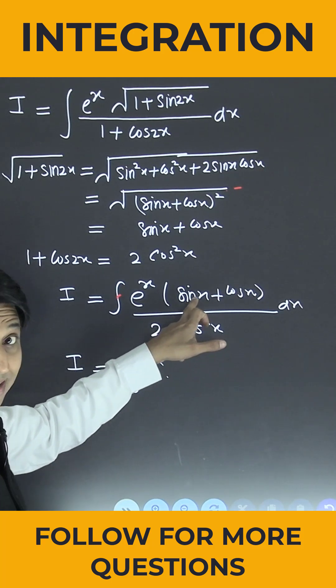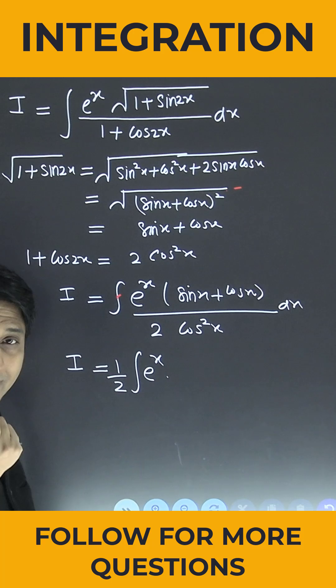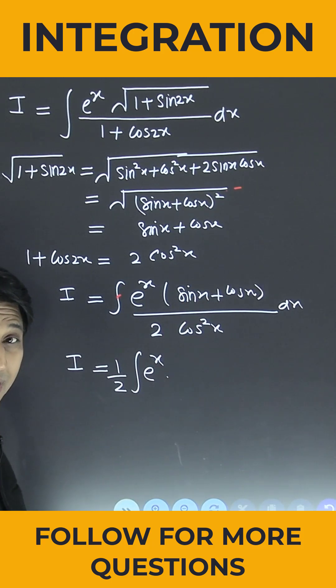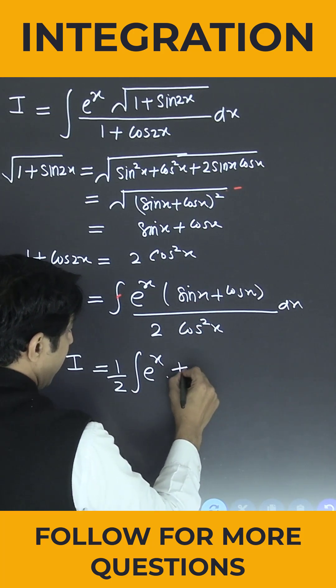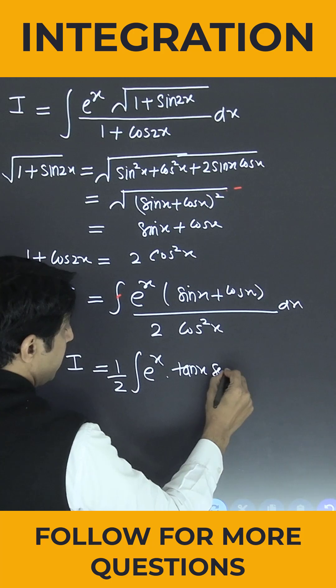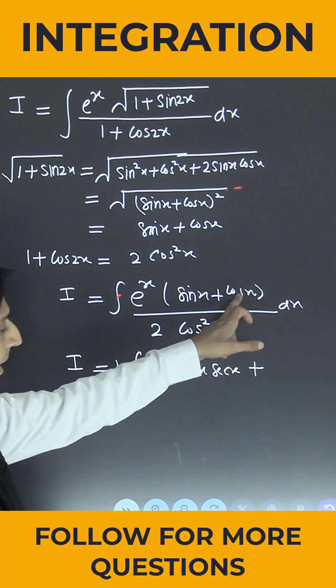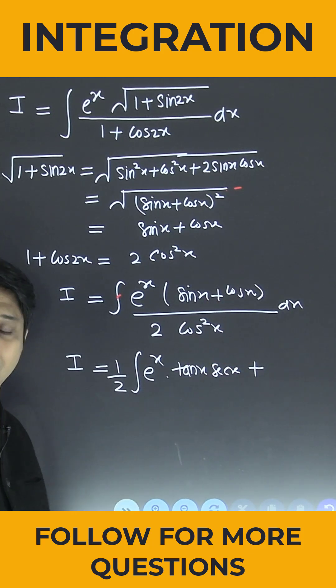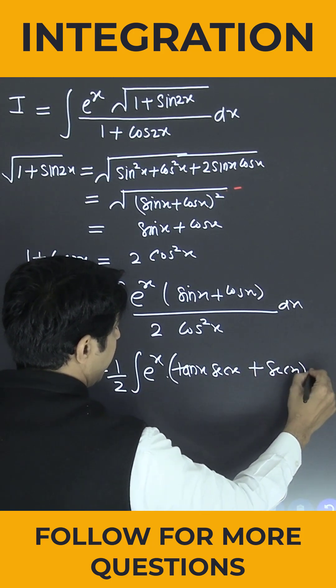Now if you divide sin x by cos²x, we get tan x sec x. And if you divide cos x by cos²x, one cos is cancelled out and 1/cos is nothing but sec x. So this is nothing but sec x dx.